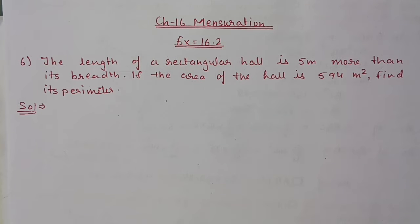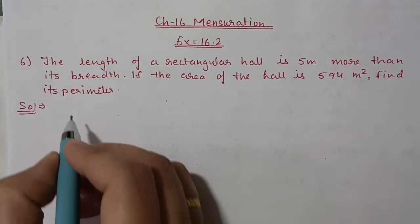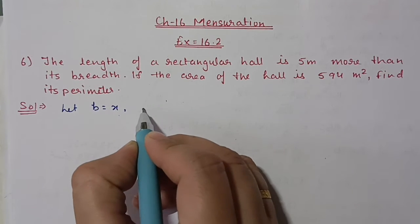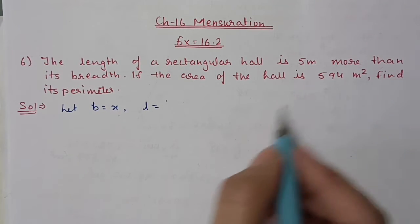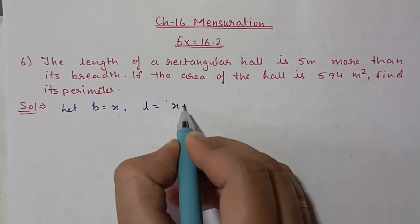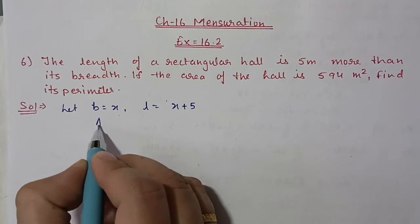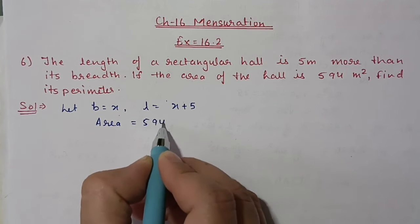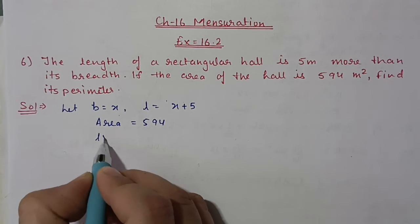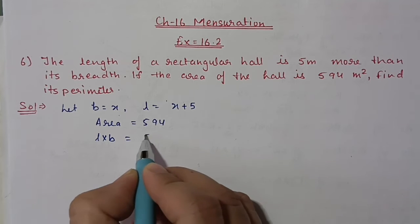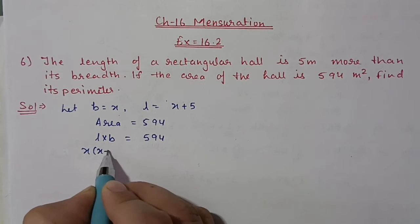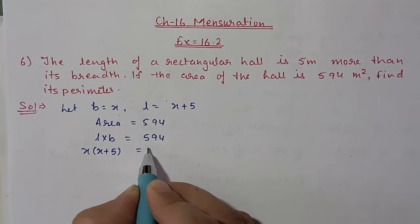They have given a relation between breadth and length, so we will take: let breadth equal to x, then length will be 5 more than breadth, means x plus 5. Area is given as 594, so area equals length into breadth: x into (x plus 5) is equal to 594.